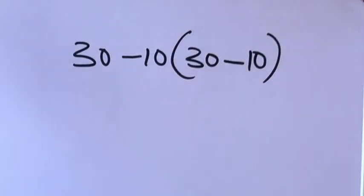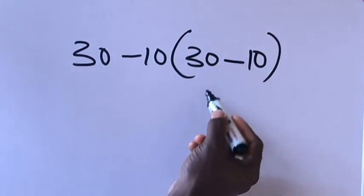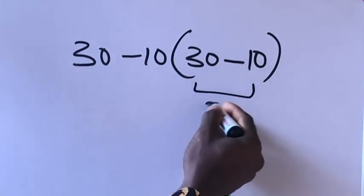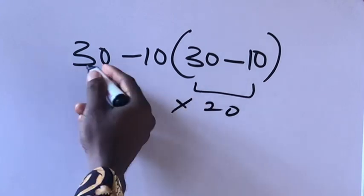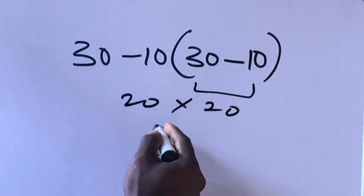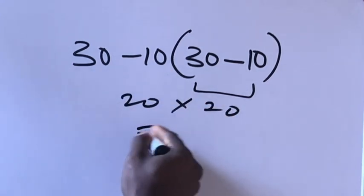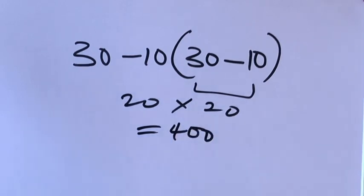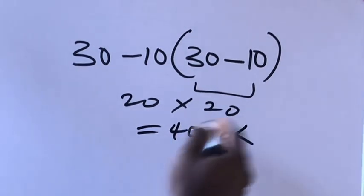Hi guys, welcome to my channel. When you have a math problem like this: 30 minus 10 times open bracket 20 minus 10 close bracket, some might calculate 30 minus 10 equals 20, then 20 times 20 which gives 400. But this answer is not correct.